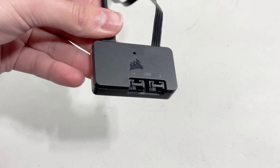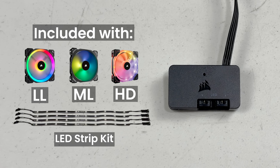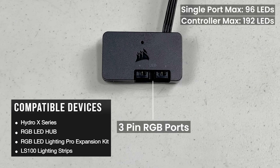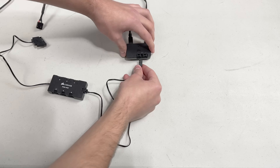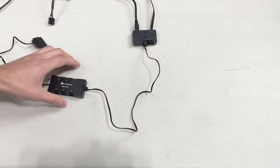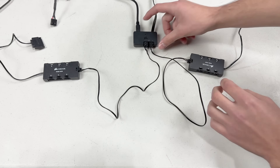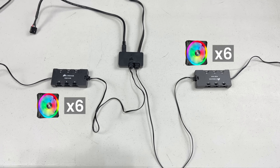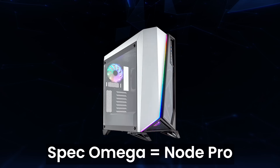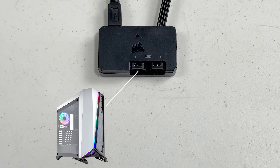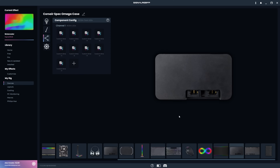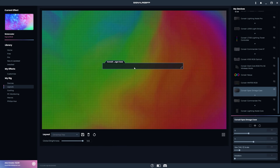The Lighting Node Pro is a simple controller with 2 3-pin RGB ports. It comes included with LL fans, ML fans, HD fans, or the Corsair LED Strip Kit, and you'll also find it inside the 280X case. Each RGB port can support up to 96 LEDs for a total of 192 LEDs. You can connect the Corsair RGB Fan LED Hub to each port to expand to 204 LEDs per port, meaning you can have 12 QL fans running off this tiny controller. In SignalRGB, you'll see two channels, one for each RGB port. Note that a Spec Omega case variant uses different firmware — the first RGB port automatically acts as the case's front RGB strip, showing up in layouts automatically. In that case, SignalRGB shows only one configurable channel.